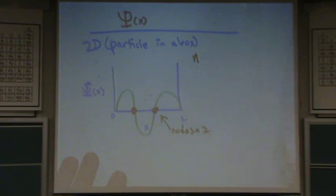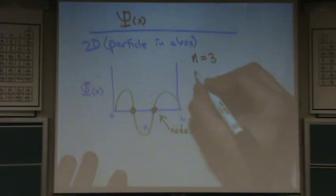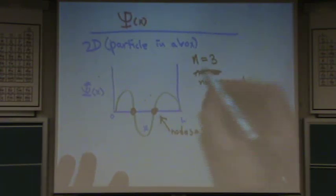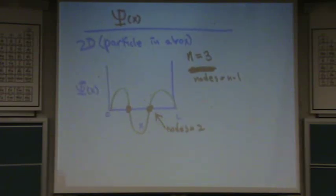That means n, your principal quantum number, also known as your orbit number and all that stuff, is going to equal three. Because n equals nodes equal n minus one. That's always true, even for 3D. That equation's going to hold. You'll need to know that equation. So there's two nodes. That means n equals three.